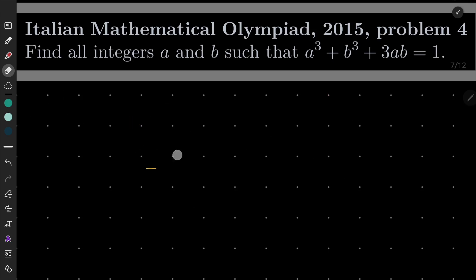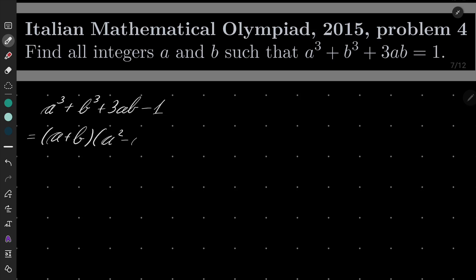Okay, so I hope that you've managed to solve this problem. My solution will be the following. Let's take everything — a cubed, b cubed, 3ab, and minus 1 — and do the following trick. We know that a cubed plus b cubed can be factorized as a plus b times a squared minus ab plus b squared, plus 3ab minus 1. Now I will subtract minus 1 and add 1.